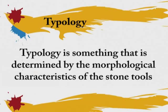All the artefacts found together in a site or a group of sites are called an assemblage. Typology is determined by the morphological characteristics of the stone tools — essentially their physical features.